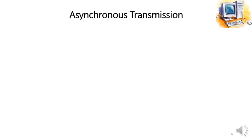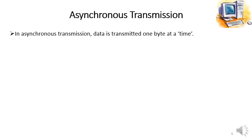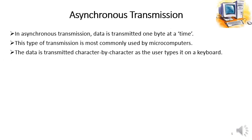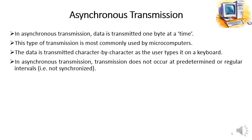We will study asynchronous transmission first. In asynchronous transmission, data is transmitted one byte at a time — one byte means eight bits. This type of transmission is most commonly used by microcomputers. The data is transmitted character by character as the user types it on a keyboard.